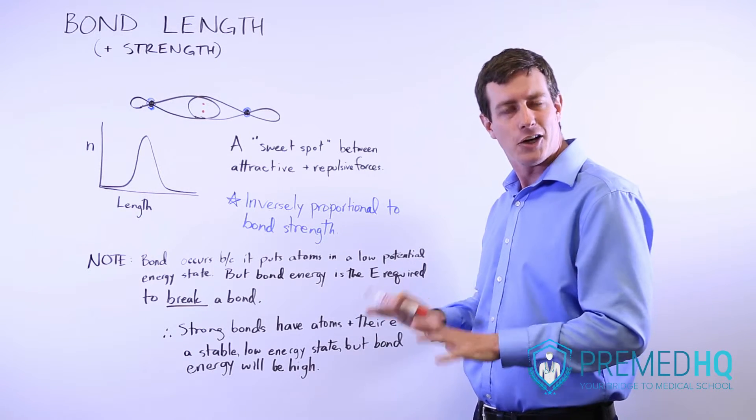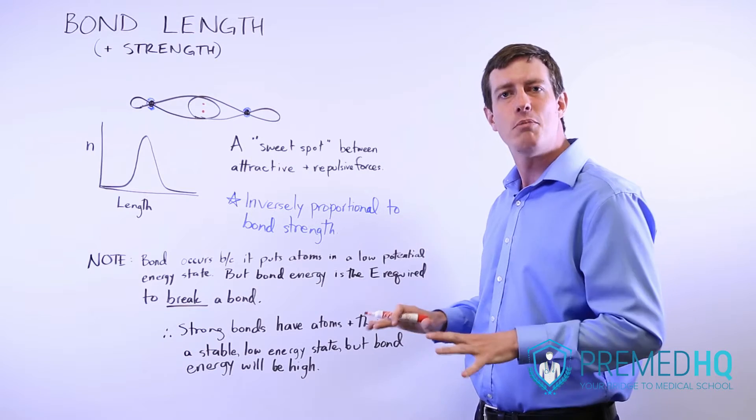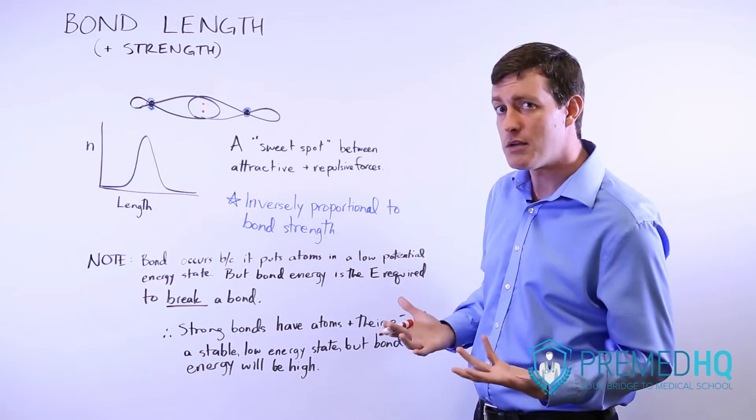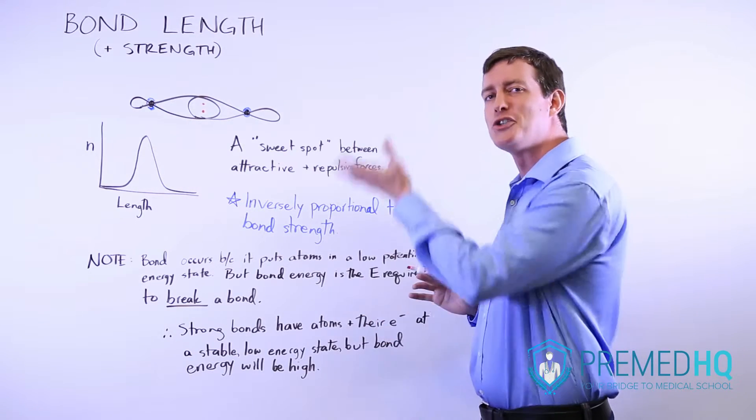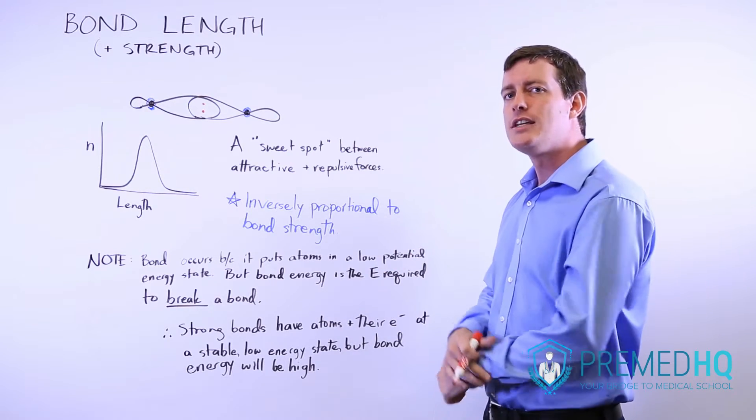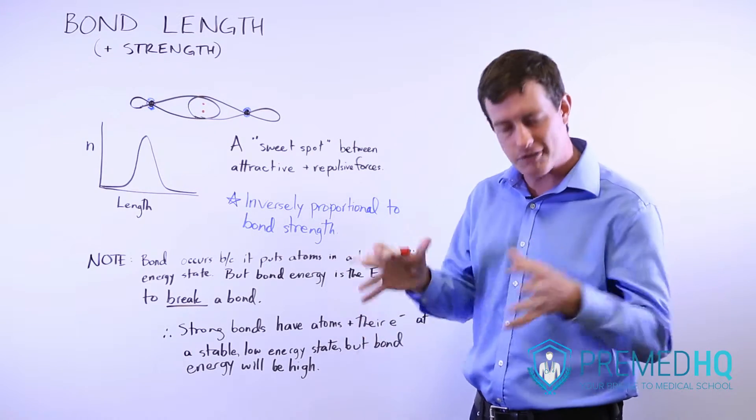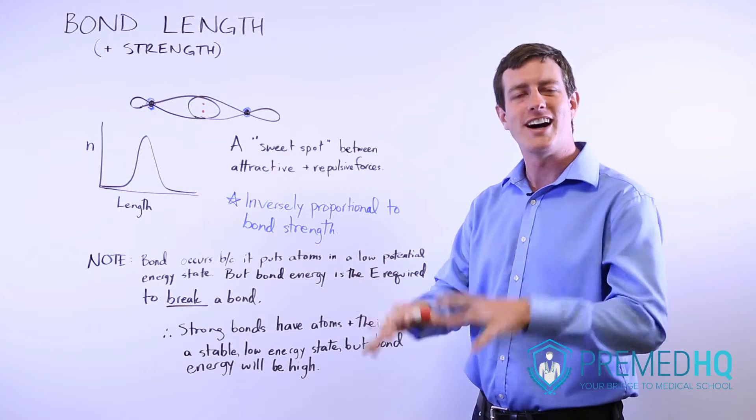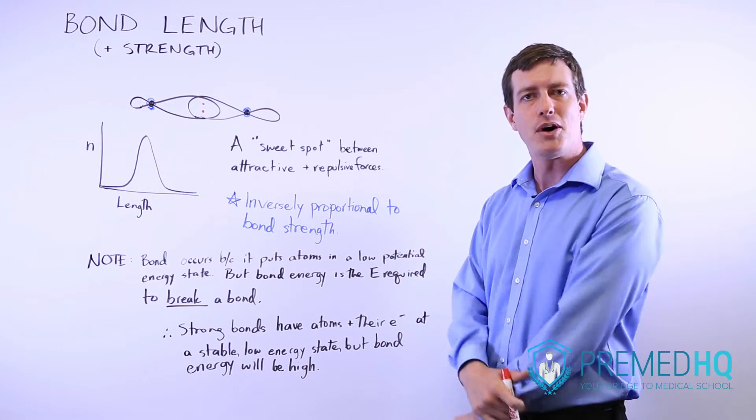They're in a very low potential energy state that is very stable. But their bond energy is very high because it takes a lot of energy that you have to put in to break apart that highly stable strong bond.